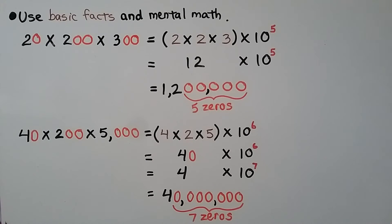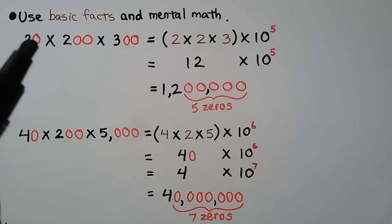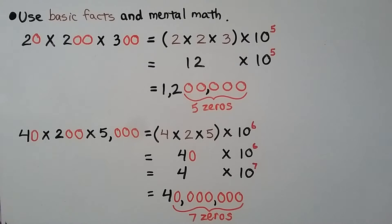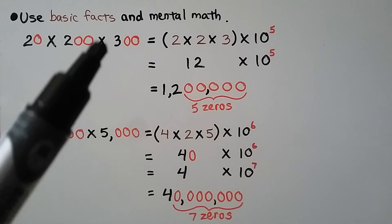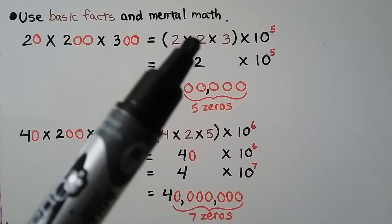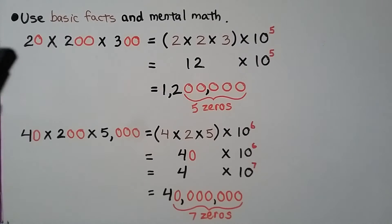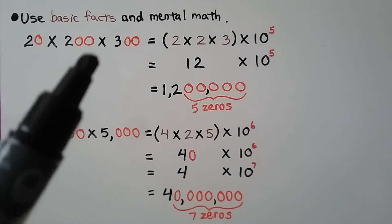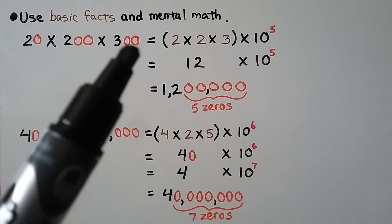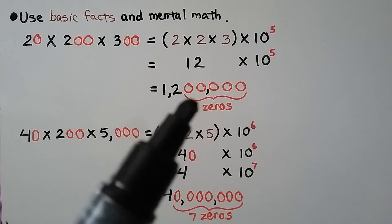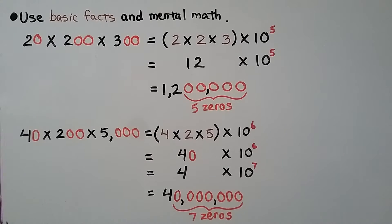Using basic facts and mental math with three factors: 20 times 200 times 300. Our basic facts are 2 times 2 times 3. 2 times 2 is 4, and 4 times 3 is 12. We count the zeros: five total. So it's 12 times 10 to the fifth power. We write 12 with five zeros: 1,200,000.